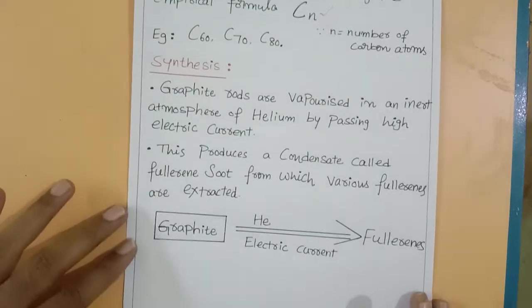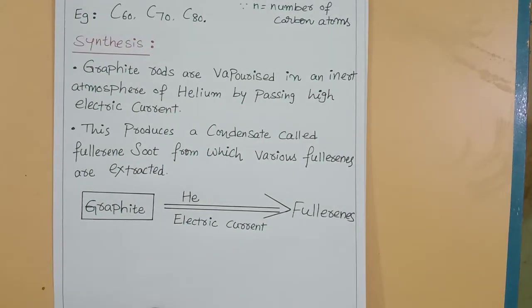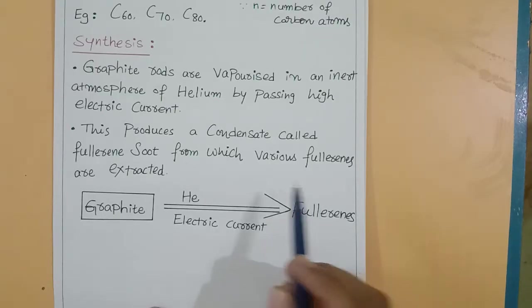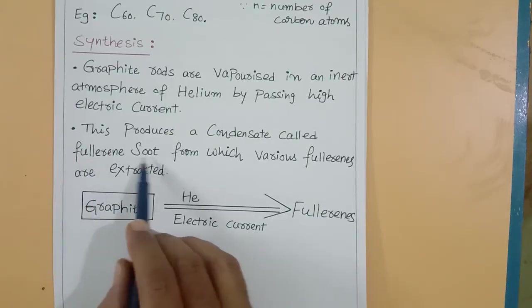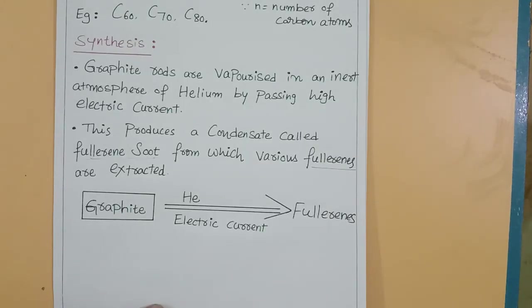Synthesis of fullerenes: How do we prepare fullerenes? We take graphite, which is an allotrope of carbon. Graphite electrodes pass electric current in helium atmosphere. The electric current passes through graphite, causing it to disintegrate and decompose. This produces fullerene soot. Fullerene soot is a black colored mass from which we can isolate and extract various fullerenes.